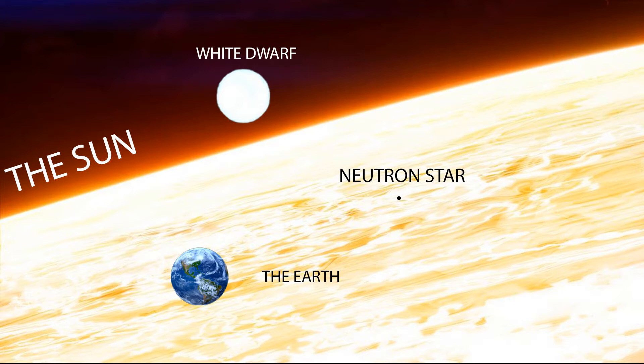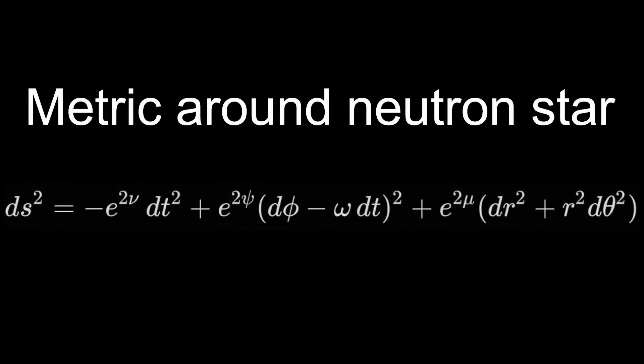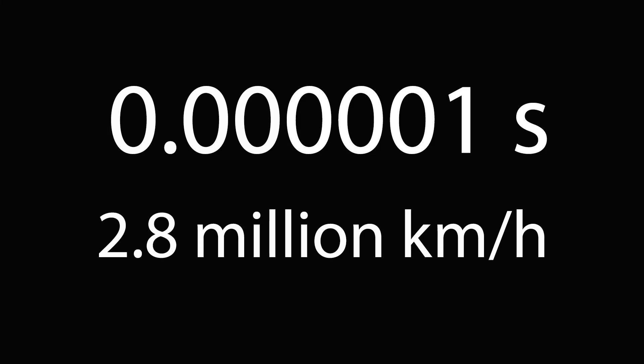Because of their density they have a very strong gravitational field. So strong that if you were to jump from a height of one meter above its surface, you would hit it in only 0.000001 seconds with a velocity of over 2.8 million kilometers per hour.